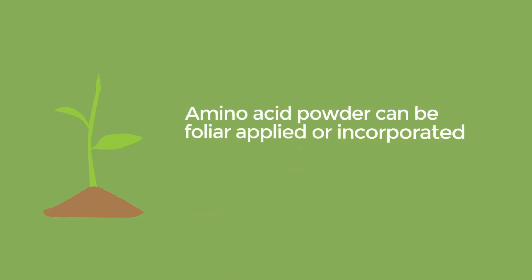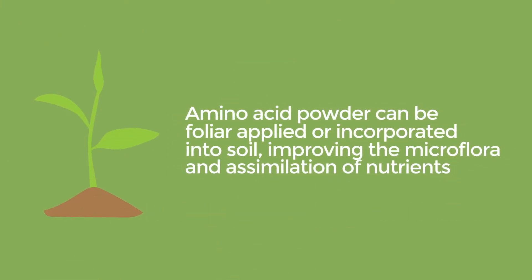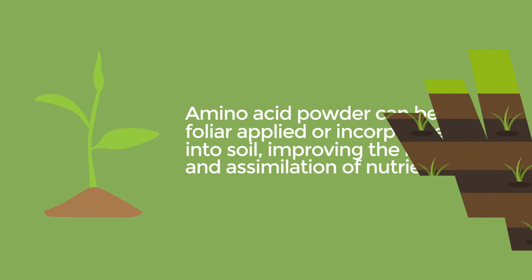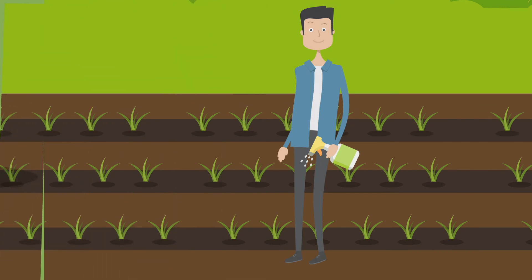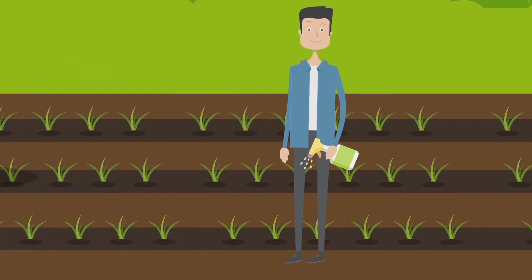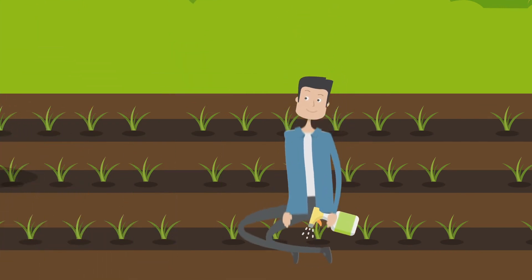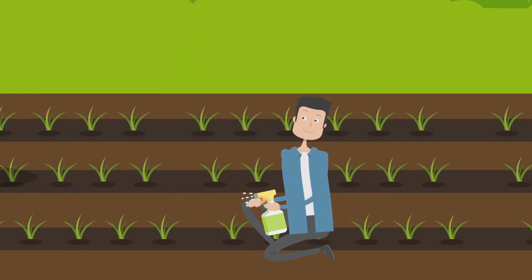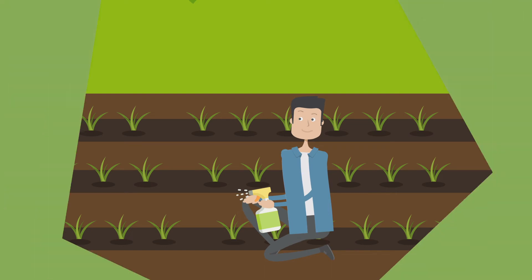Amino acid powder can be foliar applied or incorporated into soil, improving the microflora and assimilation of nutrients. When spraying amino acids, apply at the beginning of growth stages to enhance root and shoot growth, early in the day.